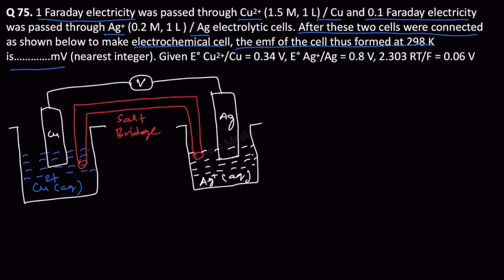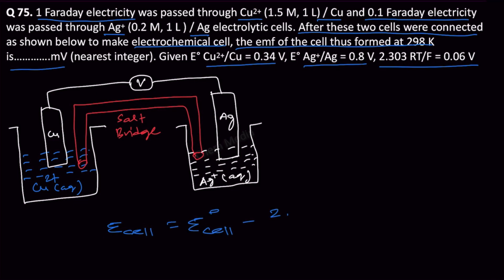The given values are the reduction potential of Cu²⁺|Cu and the reduction potential of Ag⁺|Ag. In the Nernst equation, the 2.303RT/F term is given as 0.06 volt. So we have to use the Nernst equation to find out the electromotive force. The Nernst equation is: E_cell = E°_cell − (2.303RT/NF) × log Q.